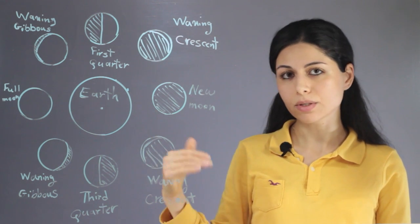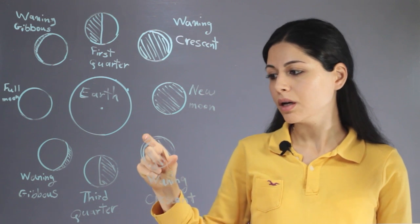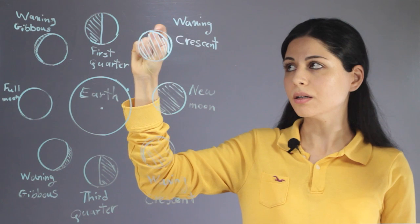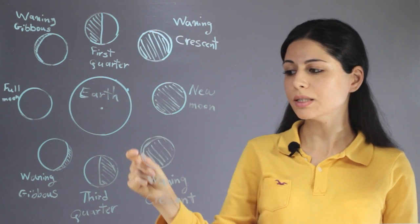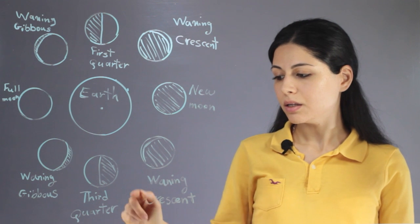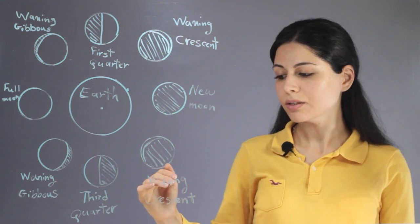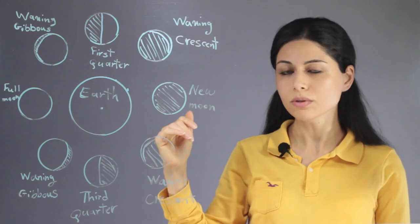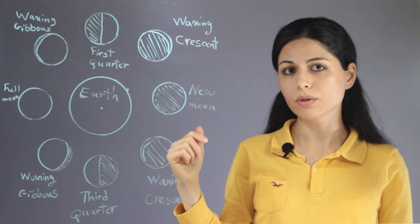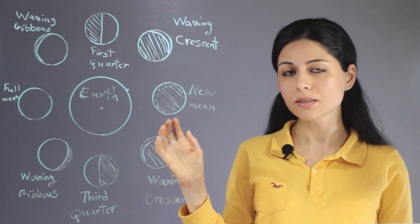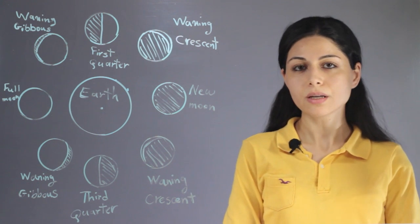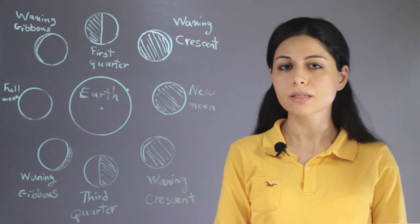After that we have the waning crescent. In the waning crescent, we see a narrow crescent of the moon which is bright and the rest is dark. Comparable to the waxing crescent, this narrow crescent is on a different part of the moon's surface. After the waning crescent we reach the new moon again, completing the eight phases of the moon in about one month.